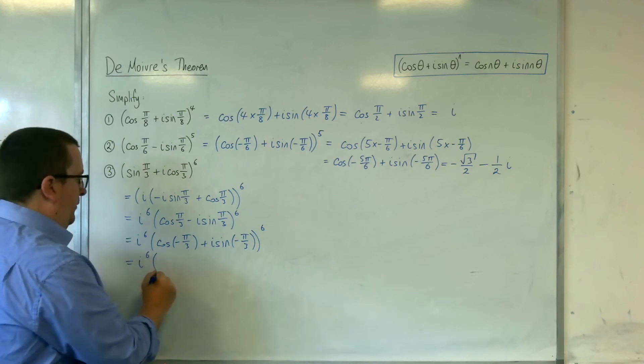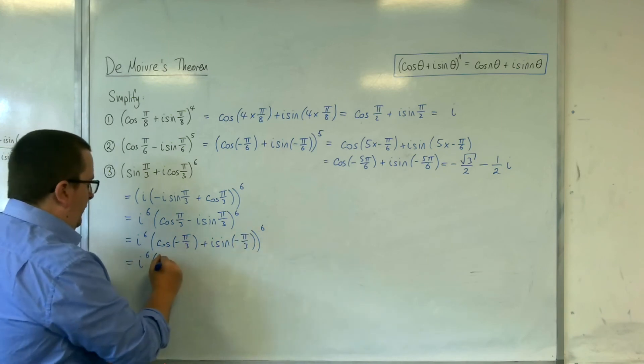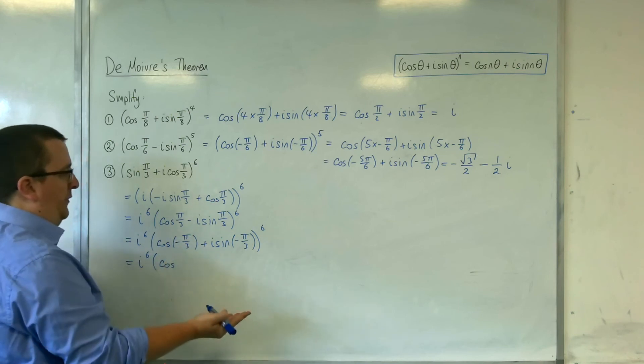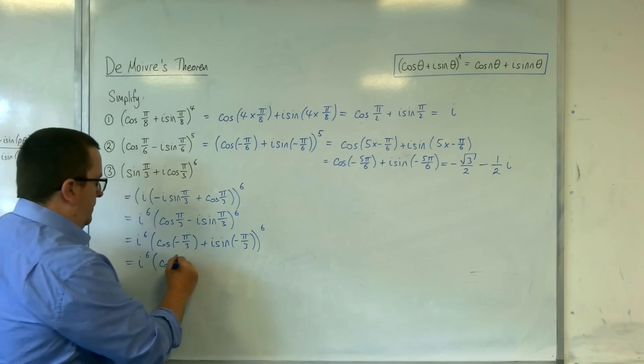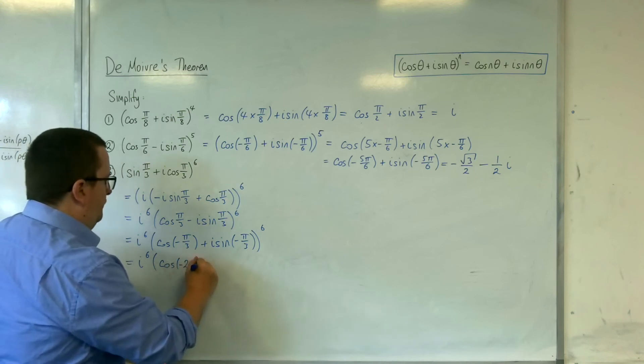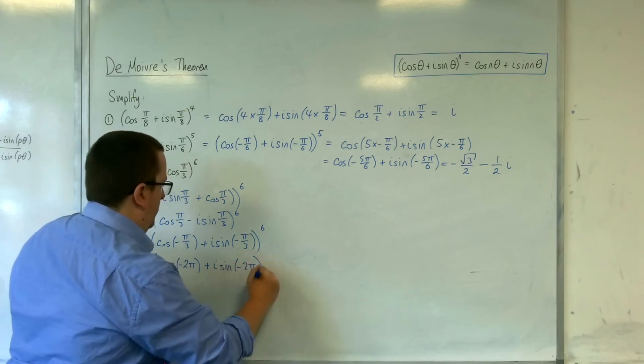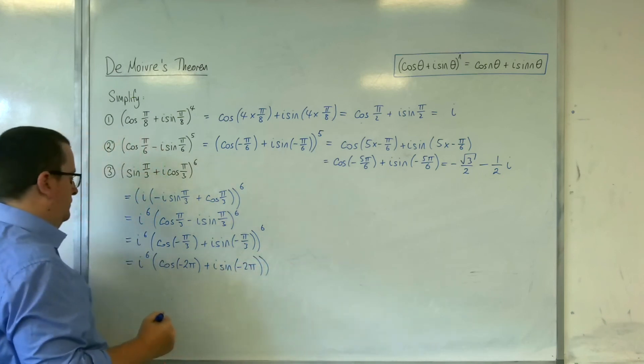So I've got i to the 6 times, now I can bring the 6 in and use De Moivre's theorem: cosine of minus π over 3 times 6, which is minus 2π, plus i sine of minus 2π.